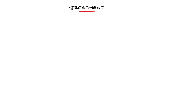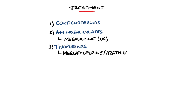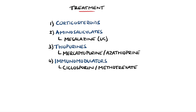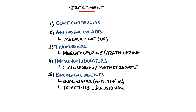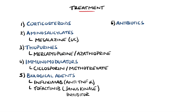Treatment generally involves the use of corticosteroids, although not in stricturing Crohn's disease as this may make it worse. Aminosalicylates like mesalazine have been shown to be effective in ulcerative colitis, and thiopurines like mercaptopurine or azathioprine are also used. Immunomodulators including cyclosporine and methotrexate can be used in some cases. More recently, biological agents such as the anti-TNF-alpha agent infliximab or JAK inhibitor tofacitinib have also been introduced. Antibiotics are considered if the patient is demonstrating a septic picture, and in Crohn's disease involving the upper GI tract, proton pump inhibitors can also be used.